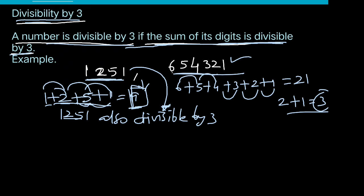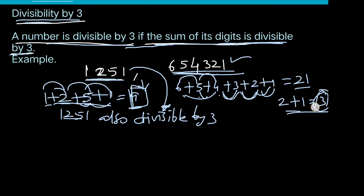Another example with digits 6, 5, 4, 3, 2, 1. Sum the digits: 6 plus 5 plus 4 is 15, 15 plus 3 is 18, 18 plus 2 is 20, 20 plus 1 is 21. Again, 2 plus 1 equals 3. So this number is divisible by 3; the sum of the digits is divisible by 3.